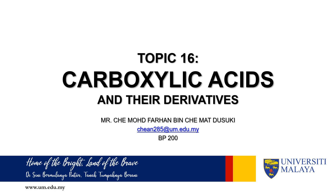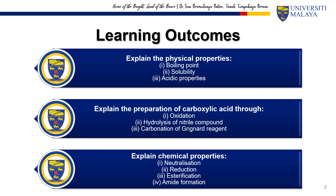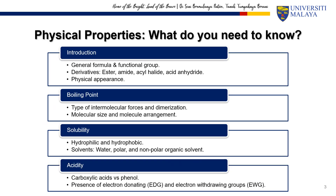Carboxylic acids and their derivatives. There are three learning outcomes in this topic. The first one is the physical properties of the carboxylic acid, followed by the preparation of the carboxylic acid, and the last LO is the chemical properties, also known as the reactions of the carboxylic acid. In this video, we will discuss the first LO: the physical properties of the carboxylic acid — covering introduction, physical appearance, boiling point, solubility, and acidity.